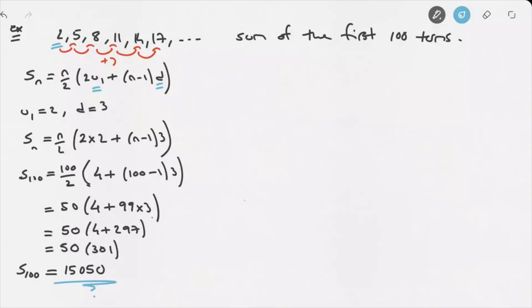And so that's how we calculate the sum of the first n terms of an arithmetic sequence. Remember, we have the choice between two formulas. And I'll just write those again here. Remember, the first formula was Sn equals n over 2 times u1 plus un. And the second formula was Sn equals n over 2 times 2u1 plus n minus 1 times d.